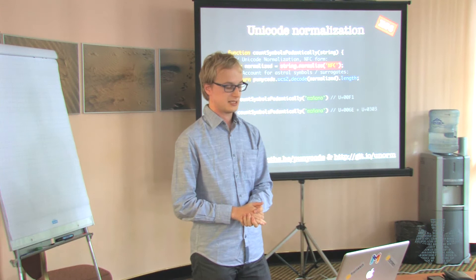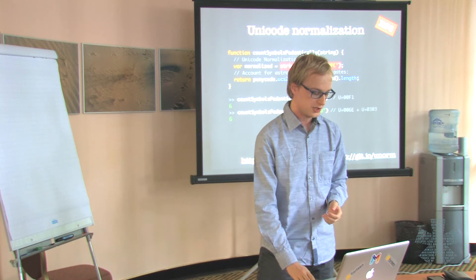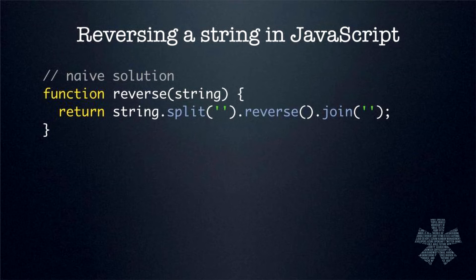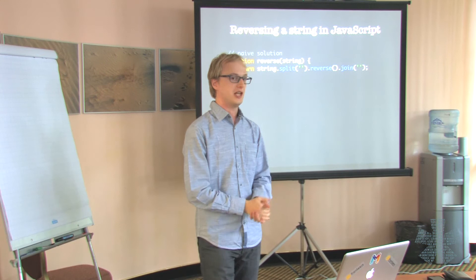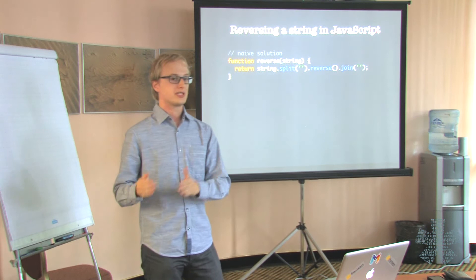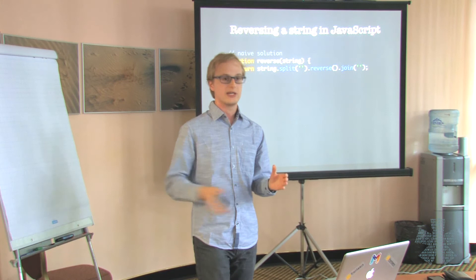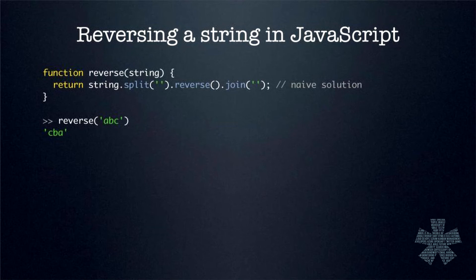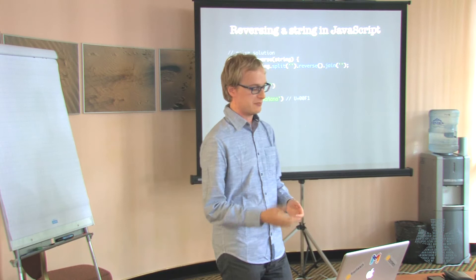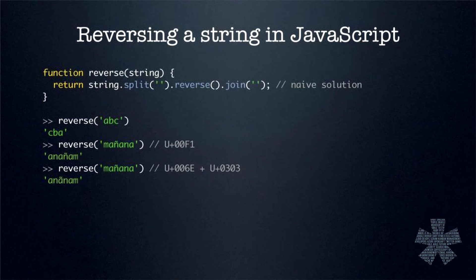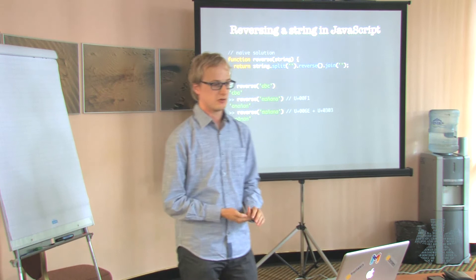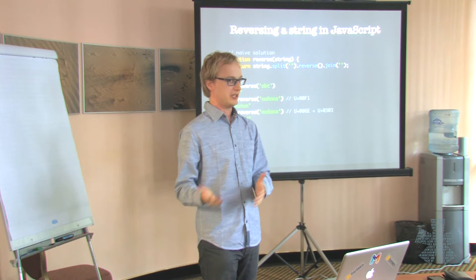Here's another fun thought exercise: how would you go about reversing a string in JavaScript? If you look on the internet, a lot of solutions look something like this — you take the string, split it up into separate characters, reverse the array of characters, and then join it back together into a string. That seems to work fine in many cases: if you pass in ABC you get back CBA, which is correct. Also, if you pass in 'mañana' using the N with a tilde as a single symbol, it still works fine. But if we use the other type of 'mañana' using a combining mark, things go wrong — the tilde now gets applied to the A character instead of to the N character.